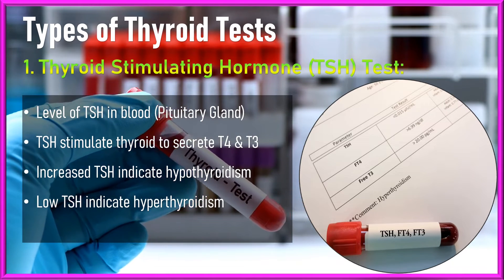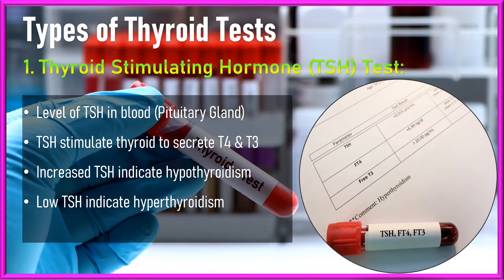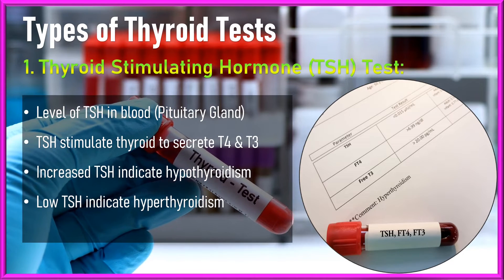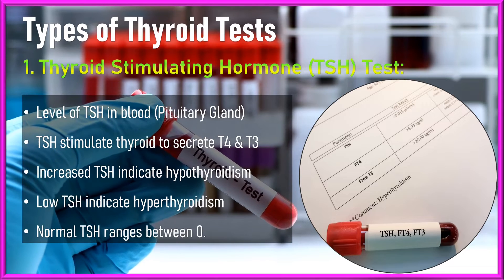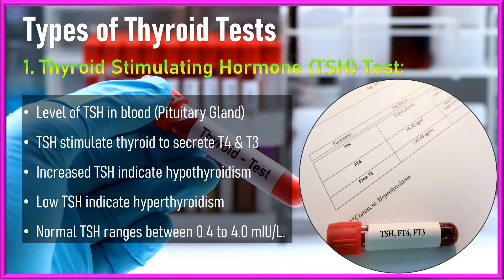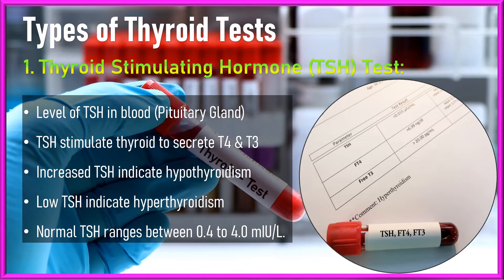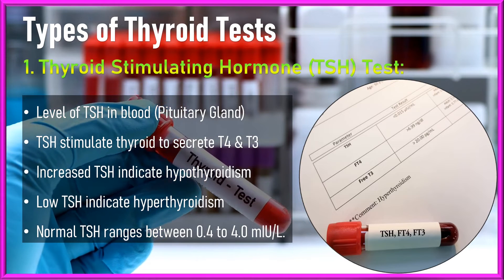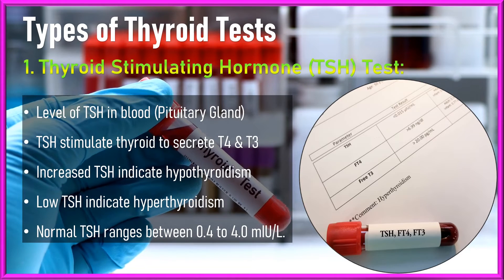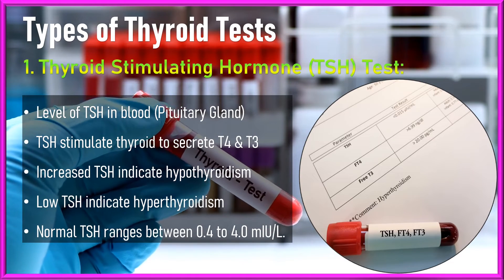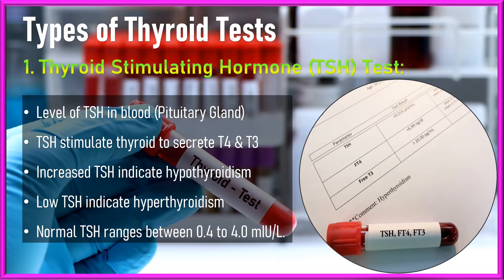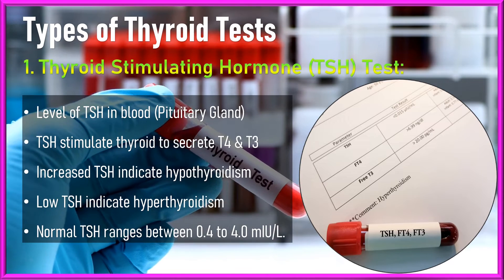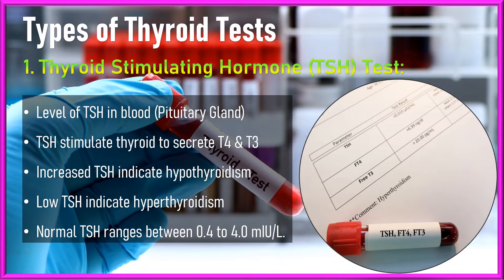Low TSH levels suggest an overactive thyroid, meaning hyperthyroidism. Normal TSH levels generally fall between 0.4 and 4 milli-international units per liter. Be careful of the units, because different labs use different units based on their equipment and standard operating procedures.